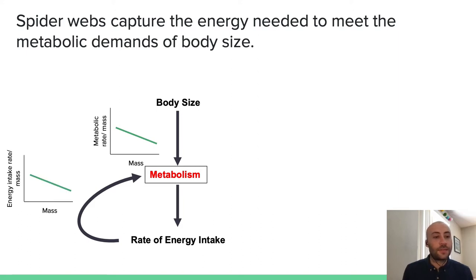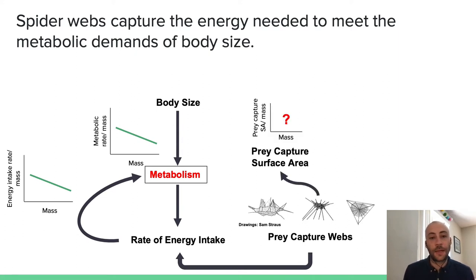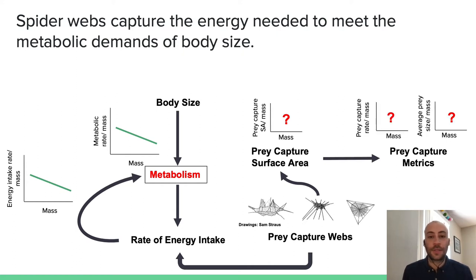Thus, we should expect that the energy intake rate per unit mass should decline with a similar slope as metabolic rate per unit mass as a function of mass. For spiders, we know that their prey capture webs are critical in extracting energy from the external environment, and one of the most important aspects of these webs is the prey capture surface area. However, it's unclear how the prey capture surface area per unit mass should relate to mass. We also know that the prey capture surface area should influence several important prey capture metrics, including prey capture rate per unit mass and average prey size per unit mass, but again it's unclear how these should relate to mass.